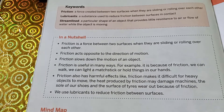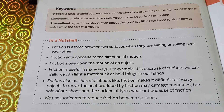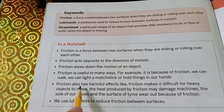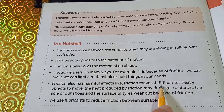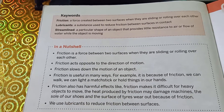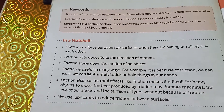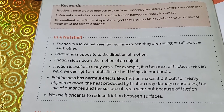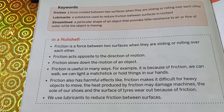Now although there are so many advantages of friction, there are some disadvantages of friction also. Friction has harmful effects — for example, friction makes it difficult for heavy objects to move. The heavier the object and the larger the surface, the more will be the friction, therefore it will be difficult for us to move heavier objects, especially on rough or rougher ground.